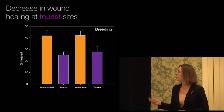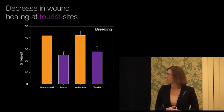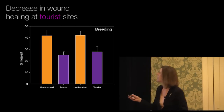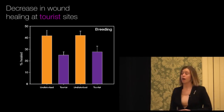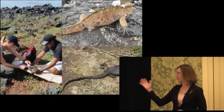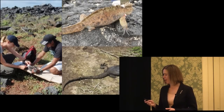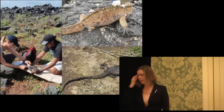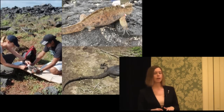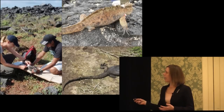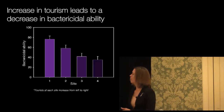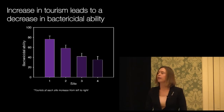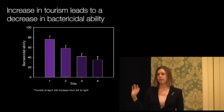But there are consequences. We've looked at wound healing ability in these animals. And as you look at the tourist sites, you see that they're both different from the undisturbed sites — they have a reduced healing ability relative to animals in populations that are just down the beach from them, basically the same habitat but just don't see people. And it's not just whether or not they're exposed to tourism or not — it's actually the degree of exposure, the intensity. So if we look at a group of different tourist sites with increasing numbers of tourists visiting those sites, we see that their ability to kill a foreign bacteria decreases as they're exposed to more people. So intensity matters as well.